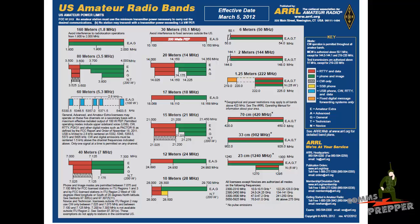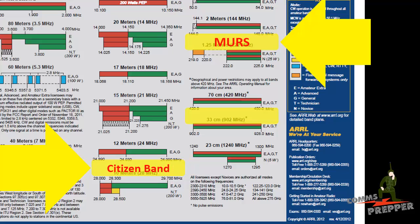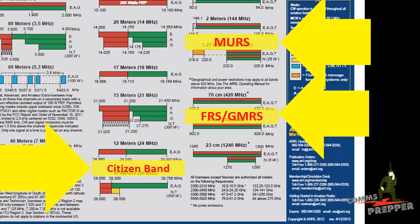Here we have the U.S. amateur radio band chart to give you an idea of what frequencies these radios are operating in, and I'm going to use this chart as a reference. To give you some more perspective, here I'm showing you where the citizen band or CB radios lie between the 12-meter and 10-meter band of the amateur radio service. You can also see where the MURS, or multiple user radio service, lies — just a little bit higher in frequency than the 2-meter amateur radio band. Below that you can see where the FRS and GMRS radio services lie, just a little bit higher than the 70-centimeter amateur radio band.